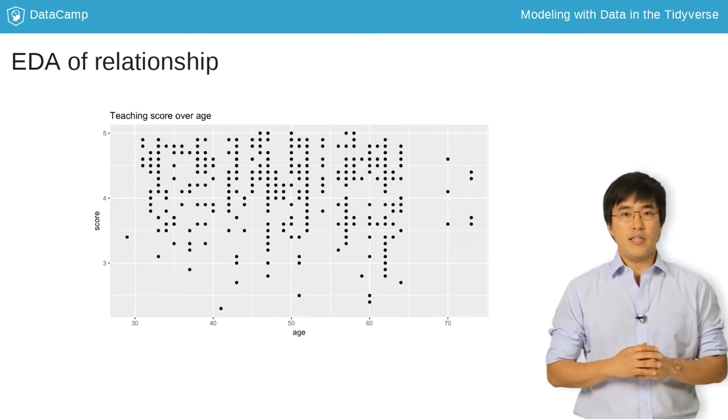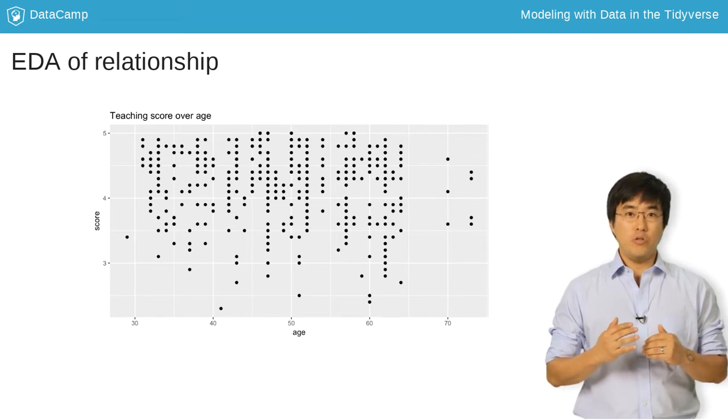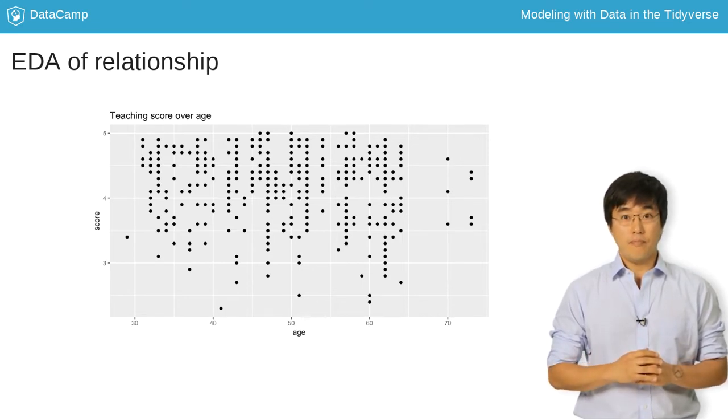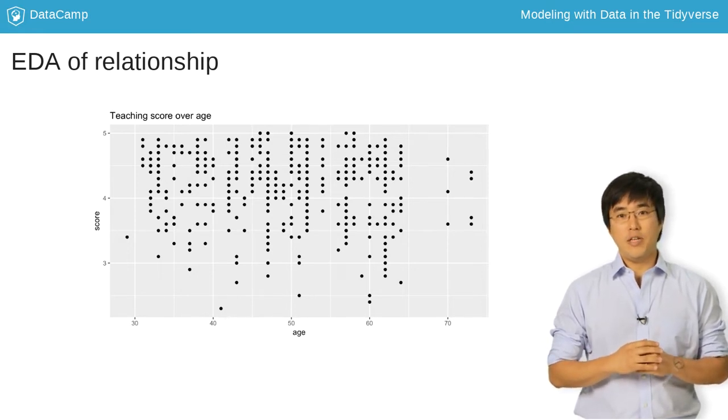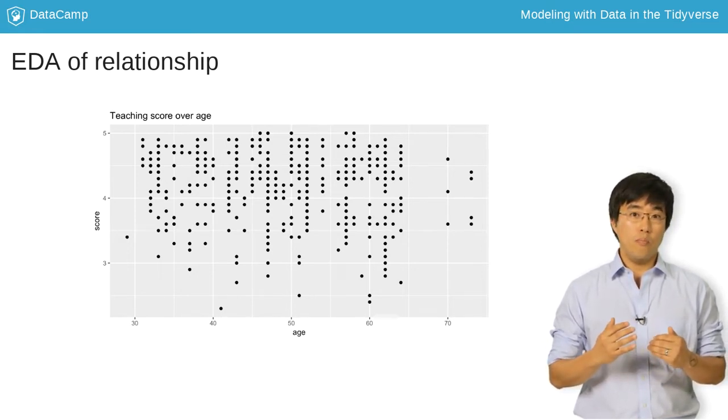Before you attempt to answer this, let's first address an issue known as over-plotting. For example, focus on the point at age equals 70 with the highest score of 4.6.